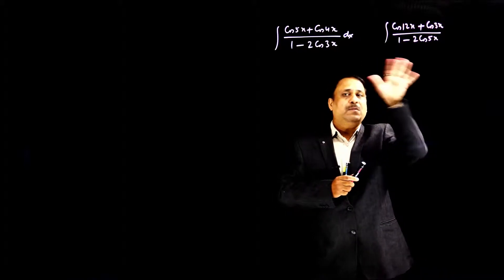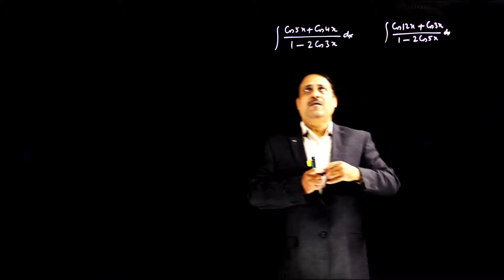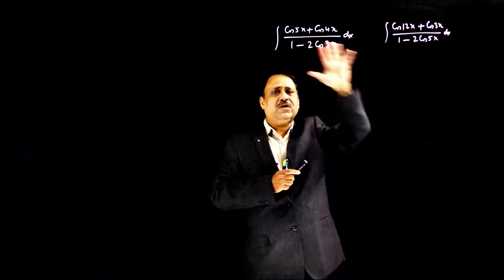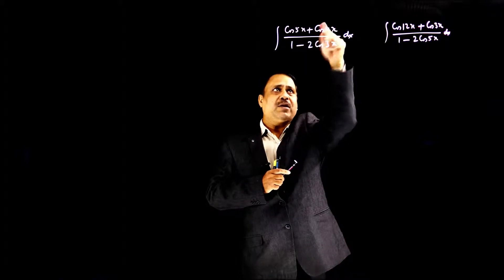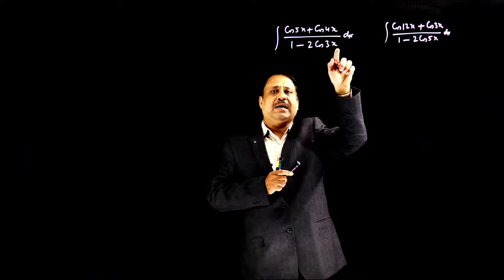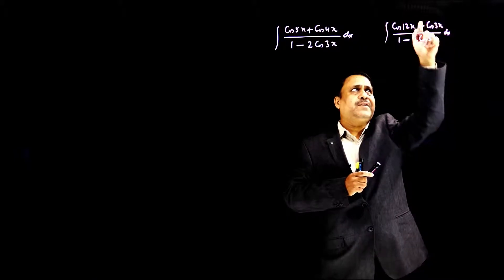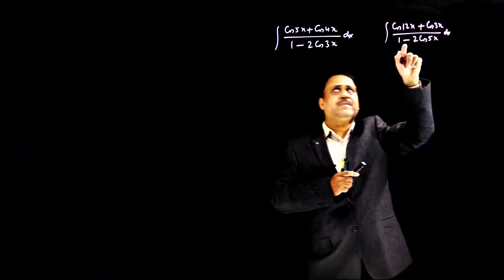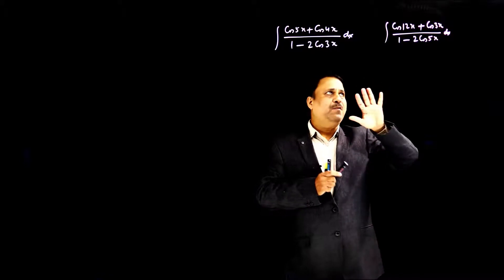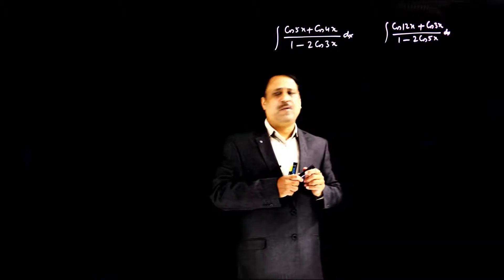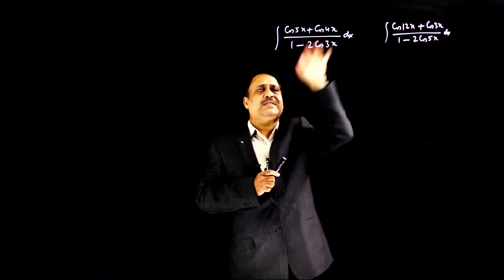What is the similarity between these problems? That you have to observe here. All terms are in cosine. The sum of the angles in the numerator is 9, and one-third of that is 3 — which appears in the denominator. Similarly, the sum is 15 and one-third is 5. If the numerator has plus, the denominator has minus, and vice versa. Based on this concept, you can have infinite problems. The key condition is that the denominator angle must be one-third of the sum of the numerator angles.